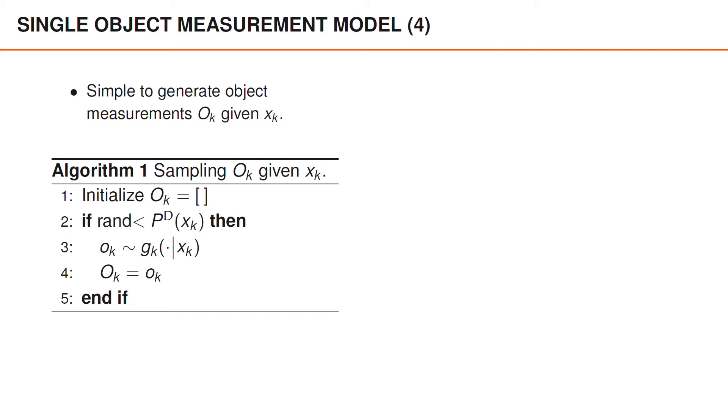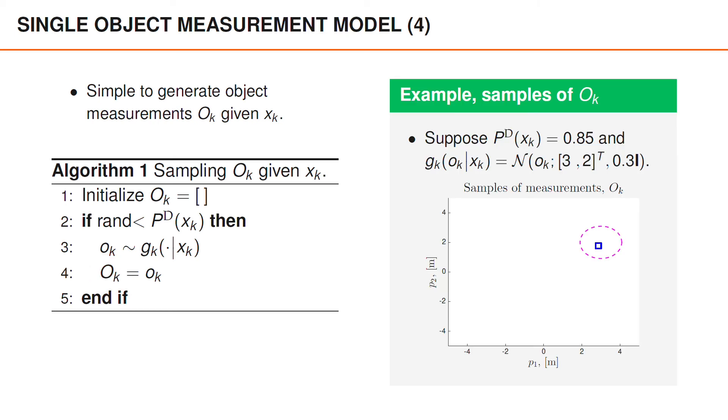One way to get a better understanding for a distribution is to look at how we can generate samples from it. For the above measurement model, this is quite simple and illuminating. To obtain a sample of O_k, given x_k, we initialize the matrix as empty. Then we generate a uniformly distributed random number between 0 and 1. In MATLAB this is simply denoted rand. And check if that number is smaller than p_d of x_k, which happens with probability p_d. If this happens, we generate the measurement vector o_k and put that into the matrix capital O_k.